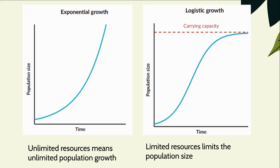If there are unlimited resources, the population will just continue to grow exponentially — this is not realistic. What we're used to seeing is logistic growth, shown in the graph on the right, where we have a carrying capacity and limiting factors contributing to how many organisms can be supported within a habitat. The population size reaches that carrying capacity and levels off, meaning no more organisms can be supported once the carrying capacity is reached.